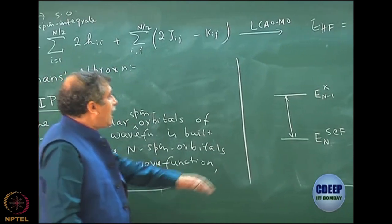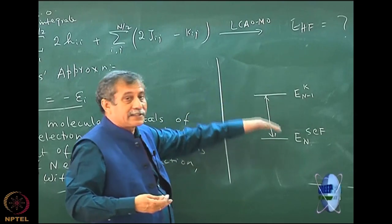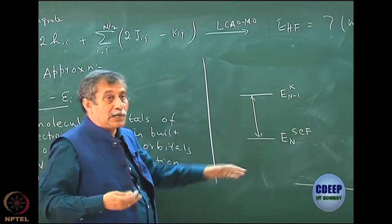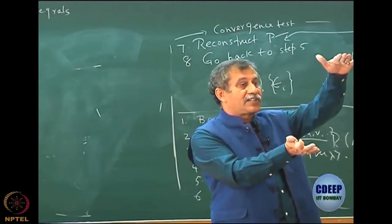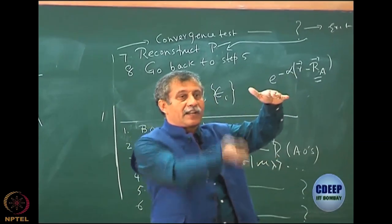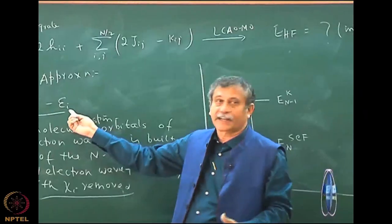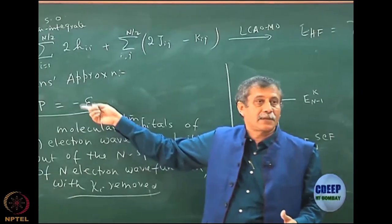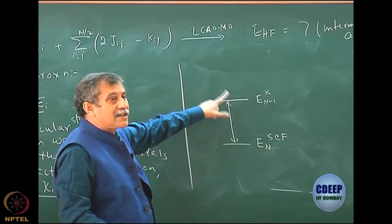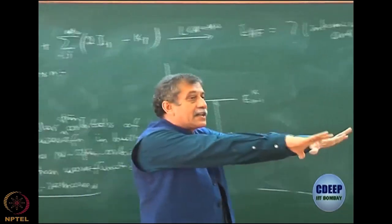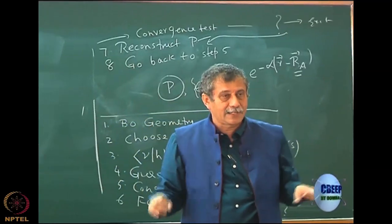Please note that you always require more energy to ionize, so the N minus 1 electron energy will always be higher than the N electron energy. You require energy to knock out an electron, and that result is minus epsilon_i because epsilon_i is actually negative, so with this minus it becomes positive. This is your Koopmans' - constructed by freezing the rest of the N minus 1 spin orbitals and only removing chi_i.